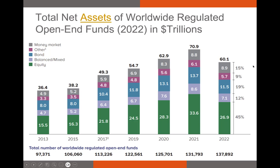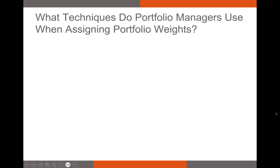As for how big the managed fund industry is globally, in 2022 there were about $60 trillion in managed assets. Roughly 15% of that is in money market funds, about 19% in bonds, some in mixed bond-equity funds, and a large portion in equity funds.